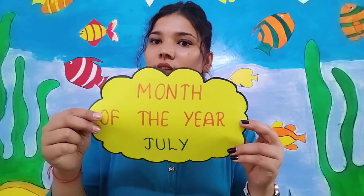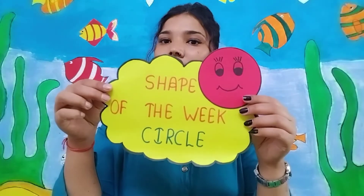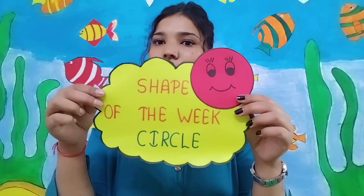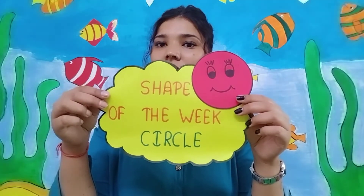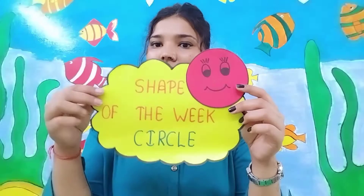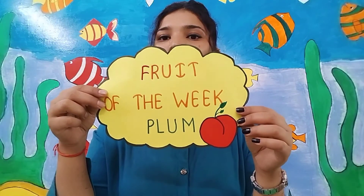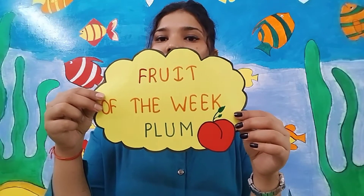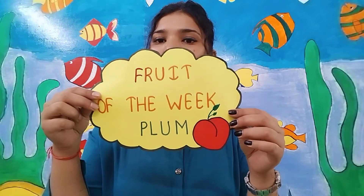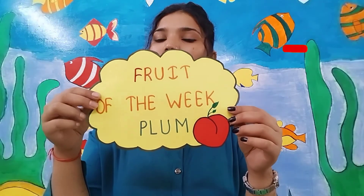Before starting the topic, let's do some assembly work. Month of the year is July. Shape of the week is circle. Fruit of the week is plum — P-L-U-M.